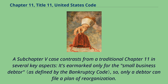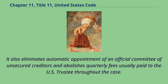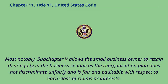A Subchapter V case contrasts from a traditional Chapter 11 in several key aspects: it is earmarked only for the small business debtor, so only a debtor can file a plan of reorganization. The SBRA requires the U.S. trustee to appoint a Subchapter V trustee to every Subchapter V case to supervise and control estate funds and facilitate development of a consensual plan. It also eliminates automatic appointment of an official committee of unsecured creditors and abolishes quarterly fees usually paid to the U.S. trustee. Most notably, Subchapter V allows the small business owner to retain their equity in the business, so long as the reorganization plan does not discriminate unfairly and is fair and equitable with respect to each class of claims or interests.